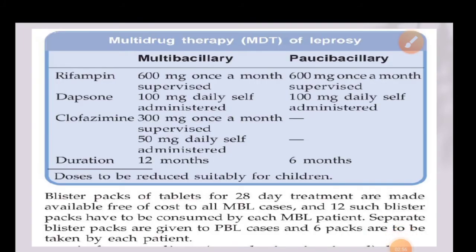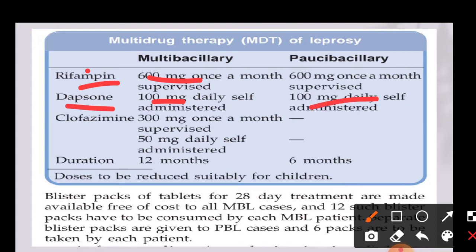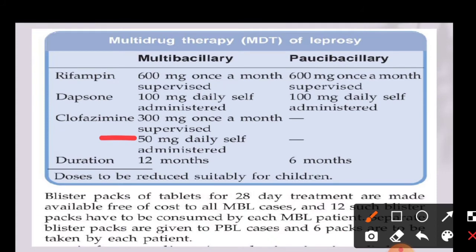A chart is provided here comparing multi-drug regimens for multibacillary and paucibacillary cases. In multibacillary, rifampicin is used at 600 mg once a month under supervision, which is the same in paucibacillary. Dapsone is used in multibacillary at 100 mg daily, self-administered, and the same 100 mg daily dose applies for paucibacillary. Clofazimine is used in multibacillary at 300 mg once a month under supervision, plus 50 mg daily self-administered, but clofazimine is not used in paucibacillary.